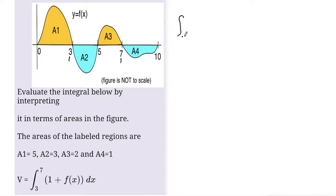And to make it the integral from 3 to 7 of 1 dx, plus, so I'm taking the first term first, and then adding the integral from 3 to 7 of f(x) dx.